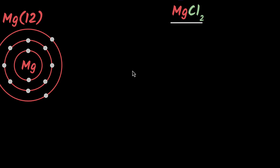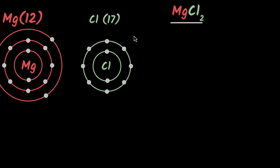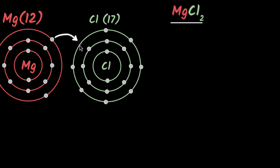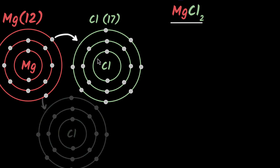What about chlorine? It has 17 electrons: two in the first shell, eight in the second, and the last seven in the third shell — and it wants one more electron. Magnesium wants to get rid of two electrons, but each chlorine only wants one. So magnesium gives one electron to one chlorine and the second electron to another chlorine nearby, bonding with two chlorines. That's how you get MgCl₂.